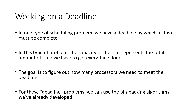In one type of scheduling problem, we have a deadline by which all tasks need to be complete. The capacity of the bins represents the total amount of time we have to get everything done. The goal becomes figuring out how many processors we need — how many folks we need to get on this project so that everything gets done by the deadline. For this type of problem, we can use the bin packing algorithms we've already talked about.